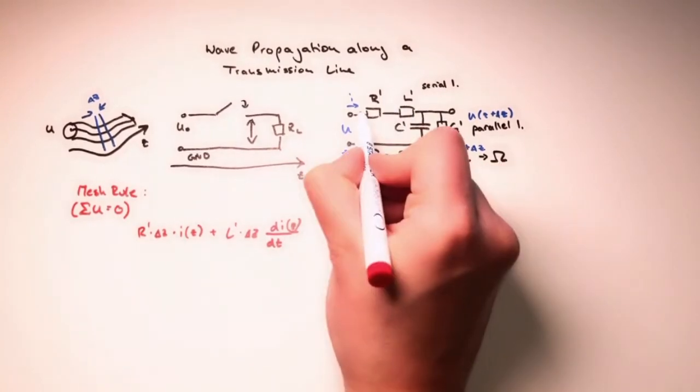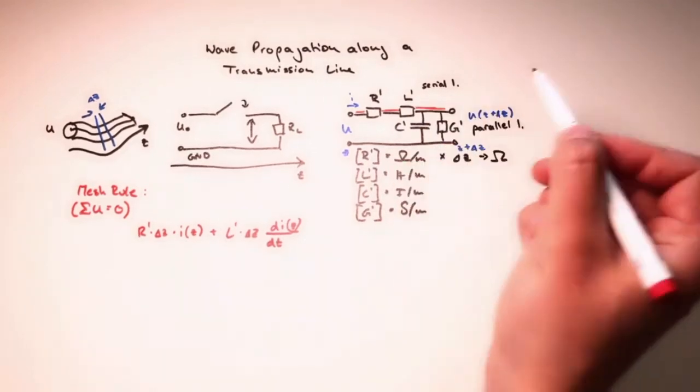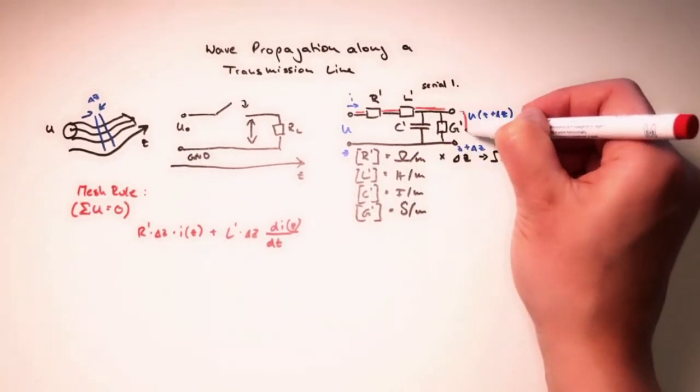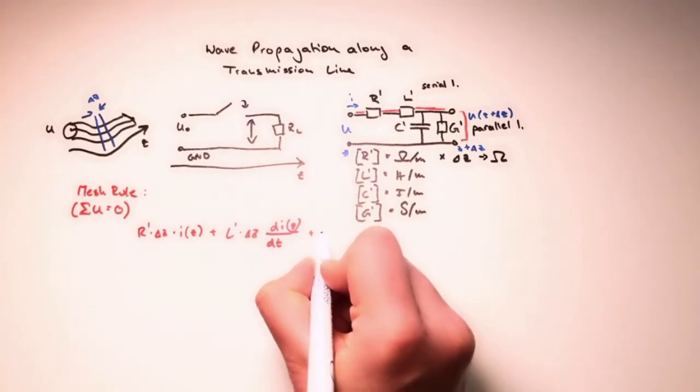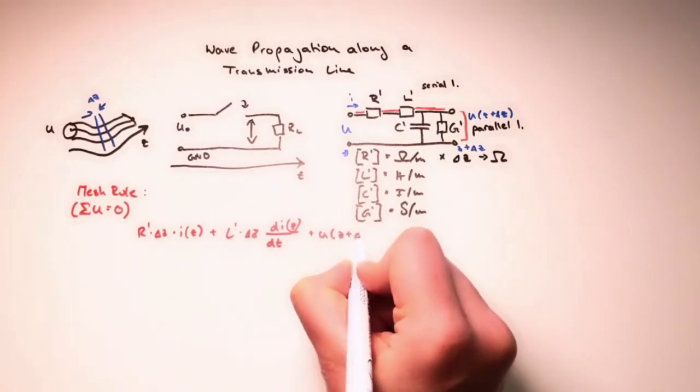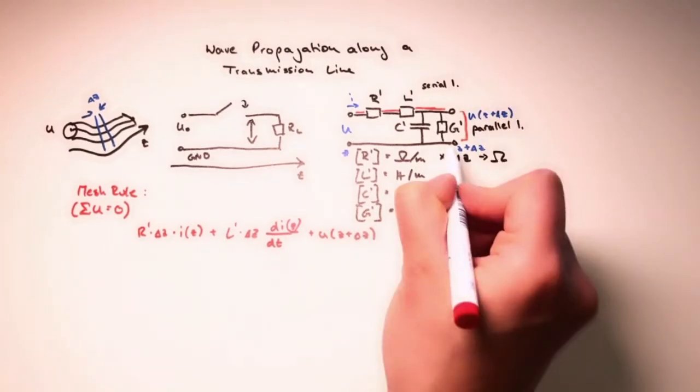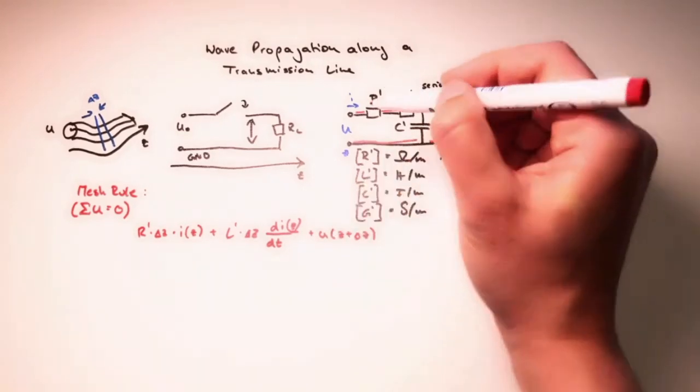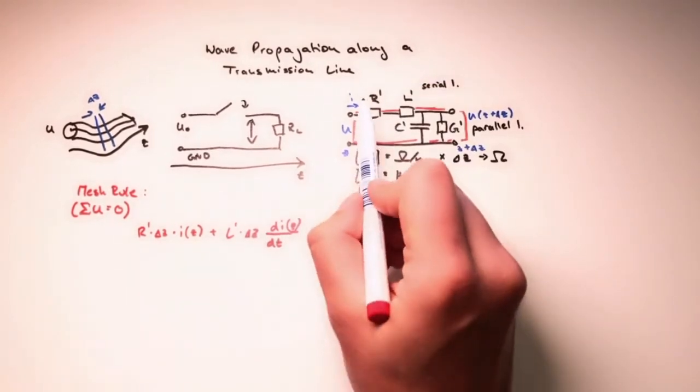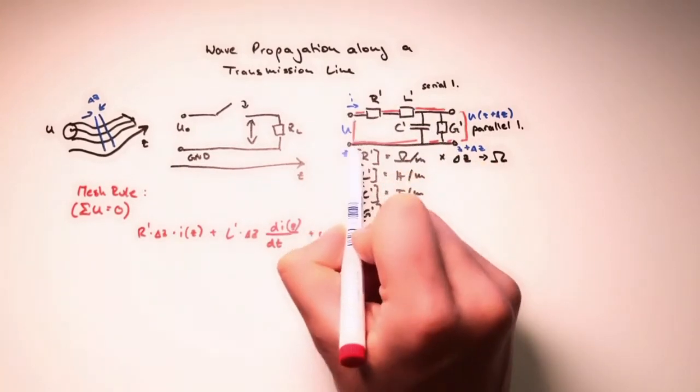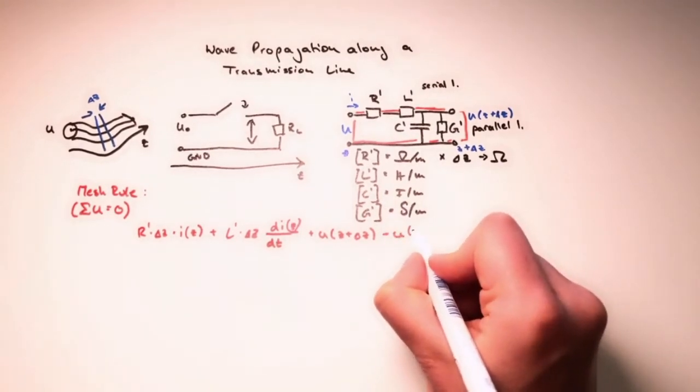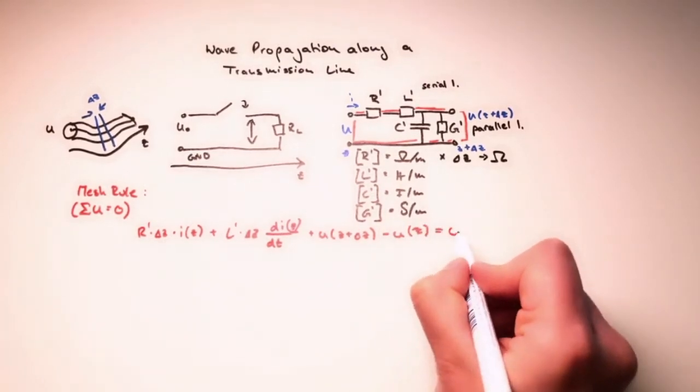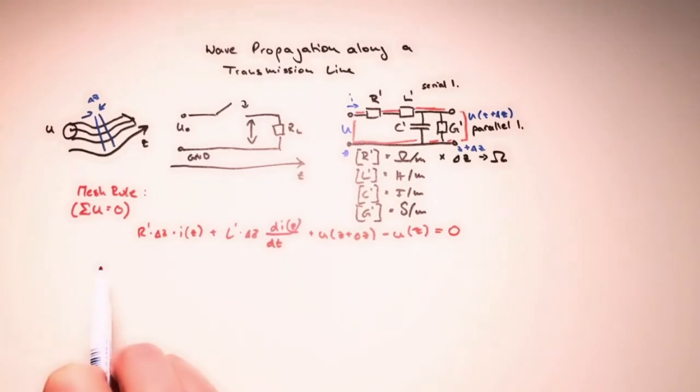Then we continue our loop. And we go here to the very end, and then down here. And you see, we will see the voltage that is U at z plus delta z. Then we continue down here. Nothing, nothing, nothing. And at the end, we go here. Now, the thing is, this was a drop, a drop, a drop, and now we go the opposite direction. We gain voltage, so we have to switch sign. So here, minus U at position z. And all of that, if we string it together, has to be zero. Of course, you could also use the other sign convention. Doesn't matter. It's zero in the end. This was the mesh rule.